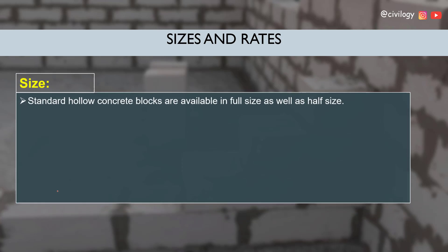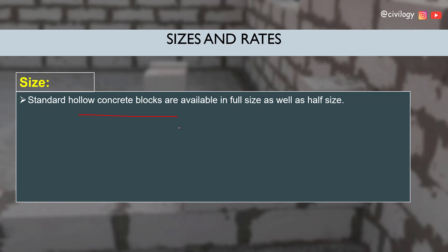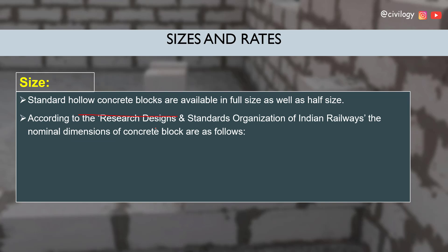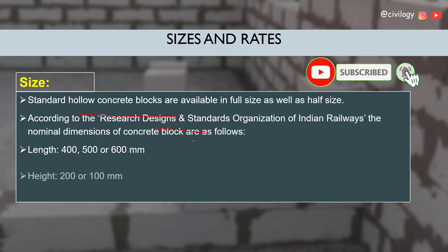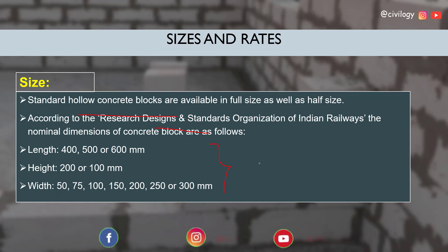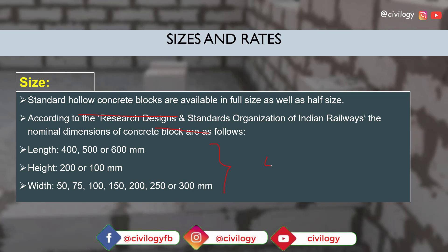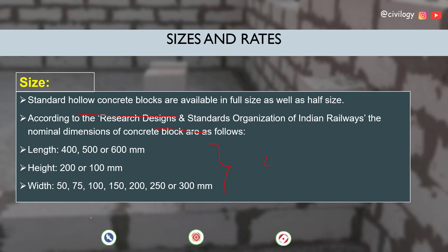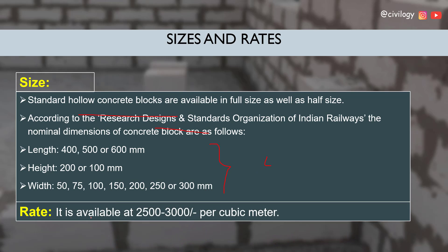Next we talk about sizes and rates. Standard hollow concrete blocks are available in full size as well as half size. According to the Research Designs and Standards Organization of Indian Railways, the nominal dimensions of concrete blocks are available in different lengths, heights, and widths — for example, 400 × 200 × 150 mm. Next, regarding rates, these blocks are available at 2500 to 3000 Indian rupees per cubic meter.